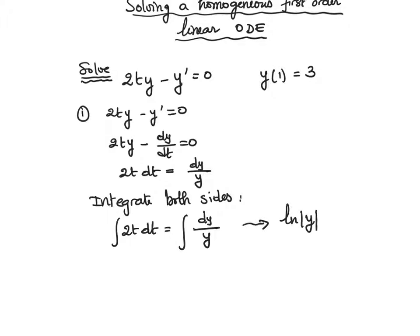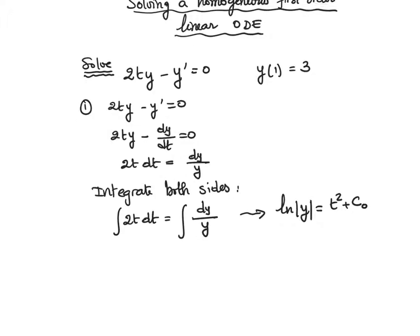Taking the exponential of both sides will give us the absolute value of y equal to e^(C₀) multiplied by e^(t²).